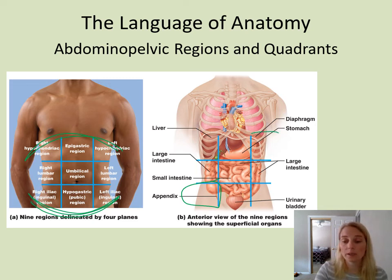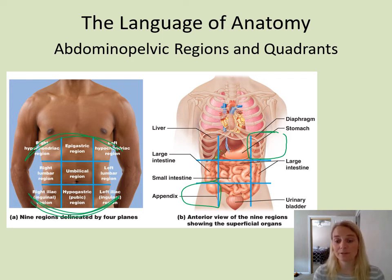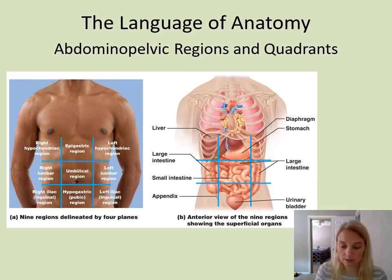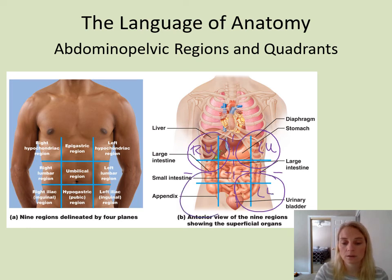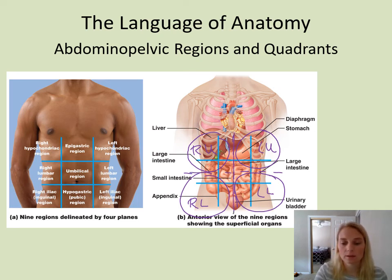Up in the left hypochondriac region we have the spleen, which can get swollen and tender in certain viral infections. Quadrants are simply a plus sign drawn right in the middle of the abdominal pelvic area, dividing it into four: left upper quadrant, right upper quadrant, left lower quadrant, and right lower quadrant. Your textbook should have a better picture of that — we just use a plus sign to divide the abdominal pelvic area into four quadrants.